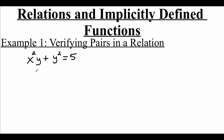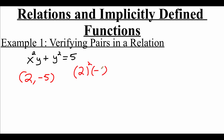We're going to look at the relation x squared times y plus y squared equals 5, and we're going to test out a few different ordered pairs to see if they're going to work. The first ordered pair that we're going to look at is (2, -5). We're just going to take our x value and our y value, plug them in, and we're hoping to get 5 as an answer at the end.